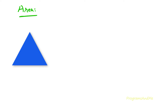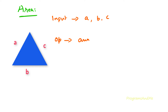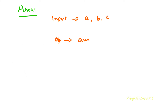Here we are calculating the area of a triangle when the length of three sides are given. The input of this program is the length of three sides a, b, and c, and we need to get the output as the area of the triangle. To find out the area when the length of three sides are given, I will use Heron's formula.